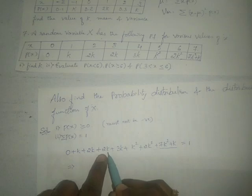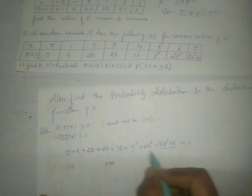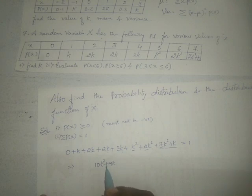Now add the like terms: K plus 2K is 3K, plus 2K is 5K, plus 3K is 8K, plus one more K gives 9K. Then adding the K squared terms: 7 plus 2 is 9, plus 1 is 10 — so 10K squared. The equation becomes 10K squared plus 9K equals 1.